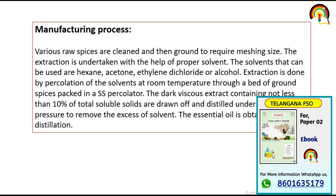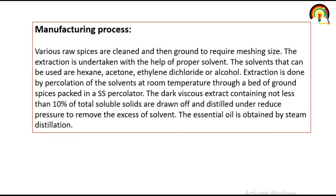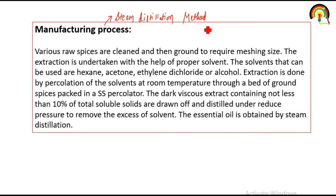In the manufacturing process, various raw spices are cleaned and then ground to the required particle size. Extraction is undertaken with the help of a proper solvent; solvents that can be used are hexane, acetone, ethyl dichloride, or alcohol. Extraction is done by percolation of solvent at room temperature through a bed of ground spices packed in a percolator. The main method used for the manufacturing or isolation of oleoresin is steam distillation.